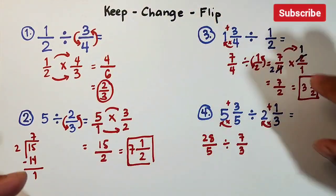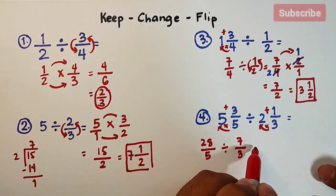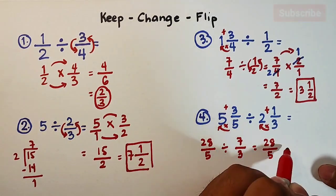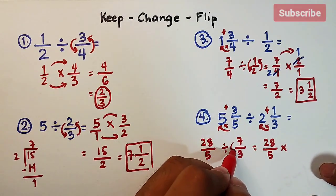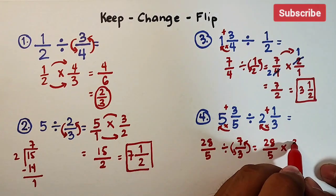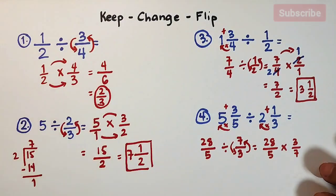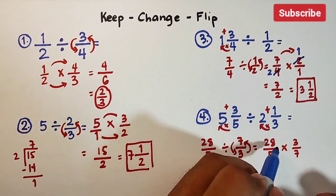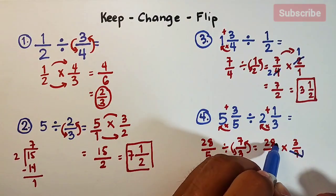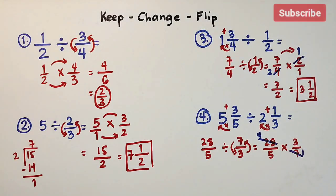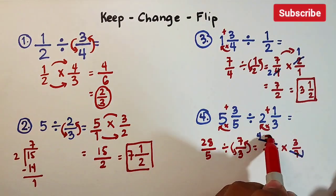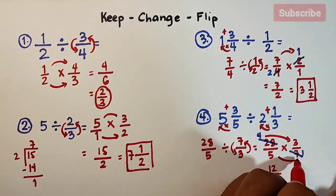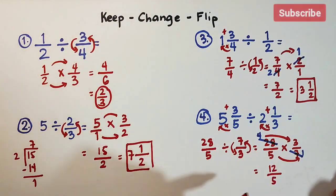Keep 28 over 5, change to multiplication, flip — get the reciprocal, which is 3 over 7. The numbers are big, but we can cancel out 28 and 7: 28 becomes 4 and 7 becomes 1. So what we have now is simply 4 times 3 equals 12, over 5 times 1 equals 5, giving us 12 over 5.